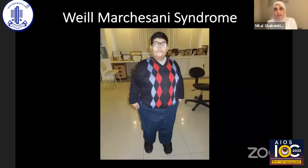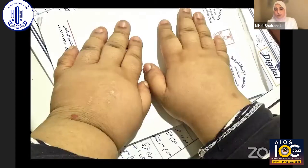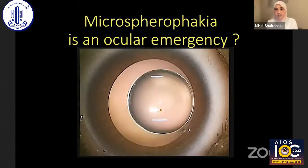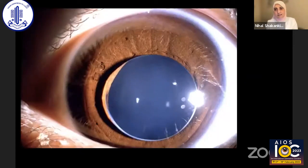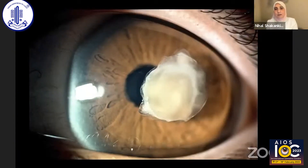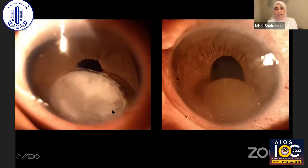It may be associated with systemic anomalies such as Weill-Marchesani syndrome with short square hands or square feet, or may be associated with homocystinuria with Marfanoid features. It is considered an ocular emergency because the lens may dislocate easily into the anterior chamber, causing damage to the back surface of the cornea. It may dislocate and become adherent to the back surface of the cornea, and become cataractous.